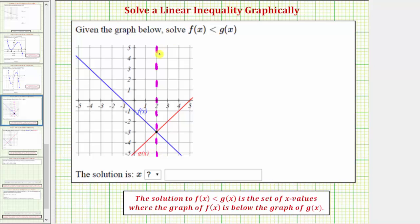So we know f(x) equals g(x) when x equals two, but we're concerned about where f(x) is less than g(x). We need to determine where the graph of f(x) is below the graph of g(x).